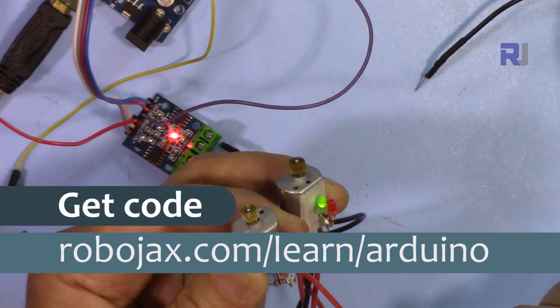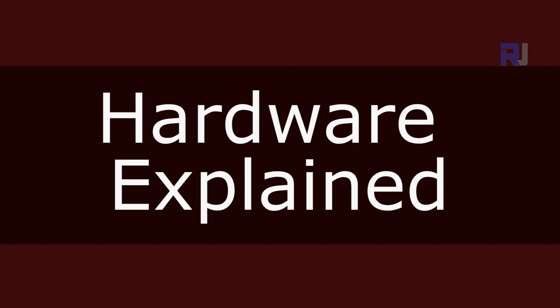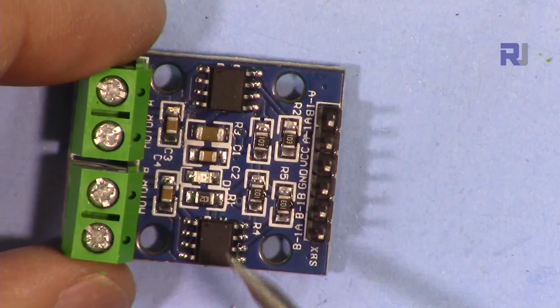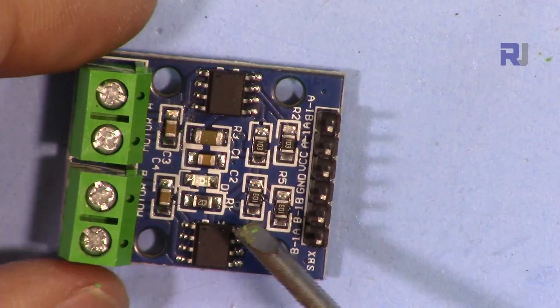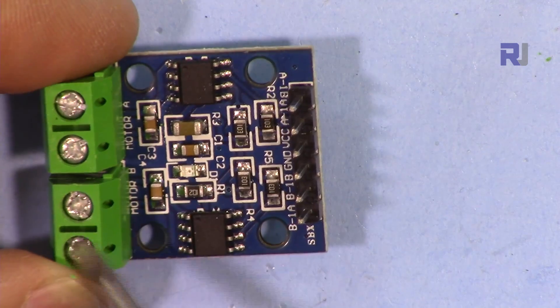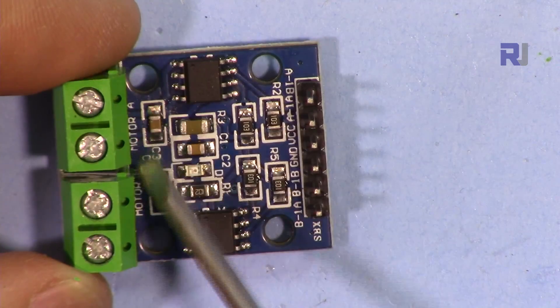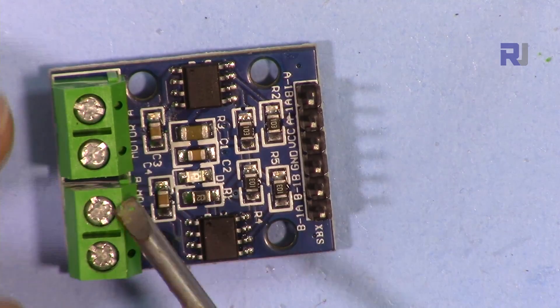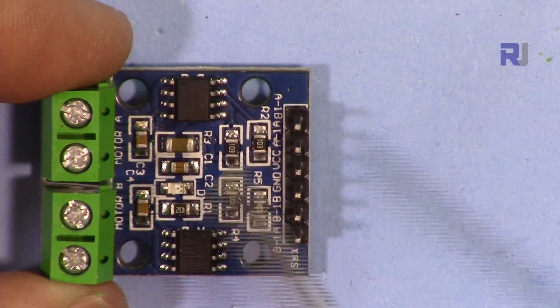Let's get started with this. This is the module. These two connectors are for motor A and these two connectors are for motor B. There is no polarity because it's for DC motor, you can connect whichever way you want.